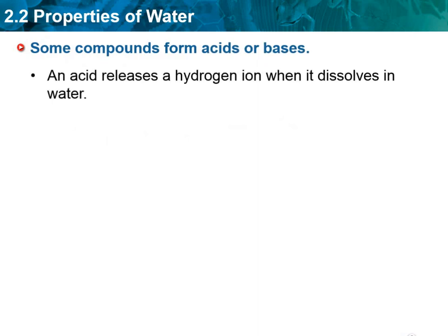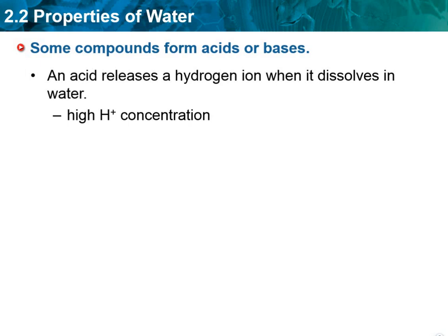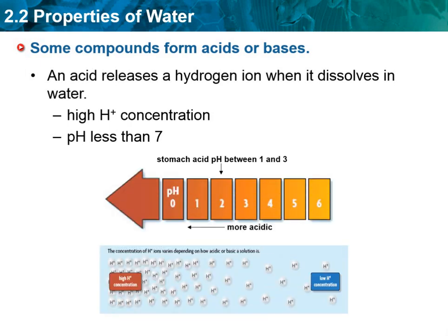An acid releases a hydrogen ion when it dissolves in water. When determining whether something is an acid, you look at how many hydrogen ions are in that solution. If it has a high amount of hydrogen ions, it means it's going to be a strong acid. That would be a pH less than seven — so one through six are going to be considered acids, with a high H+ concentration.